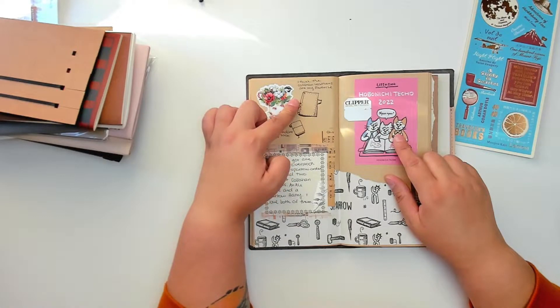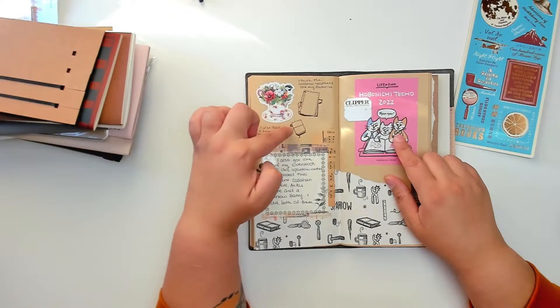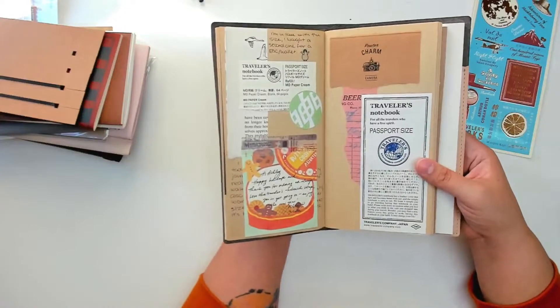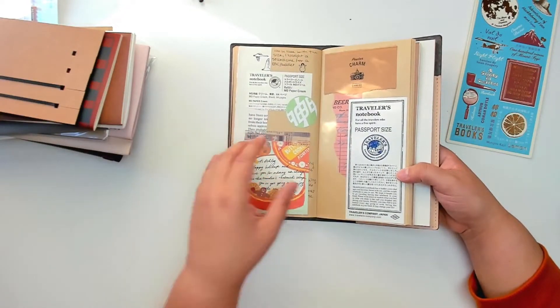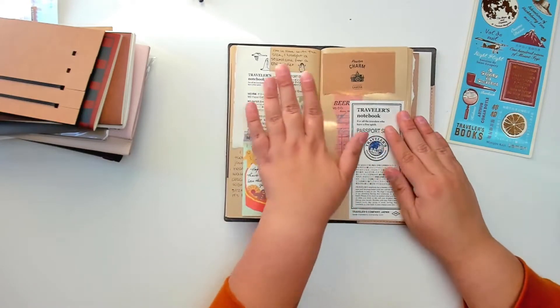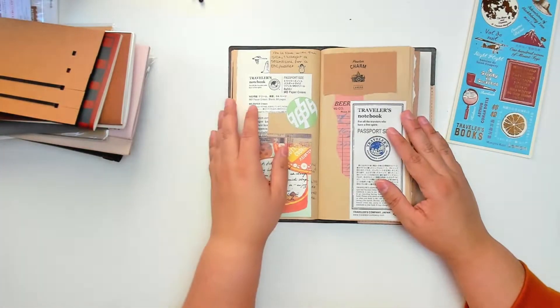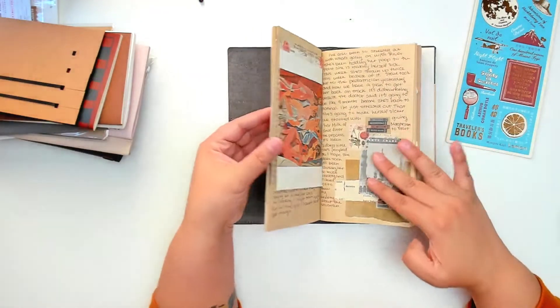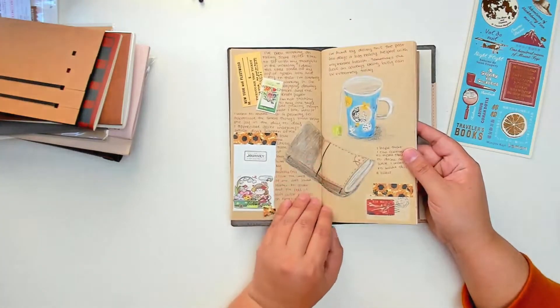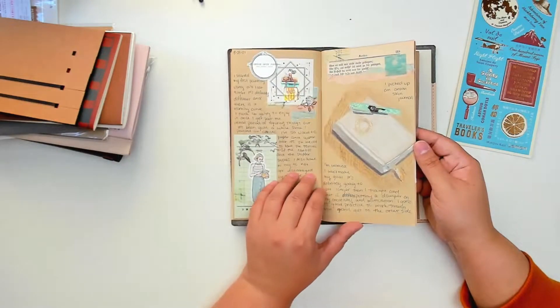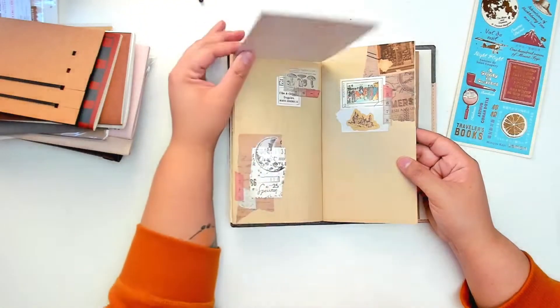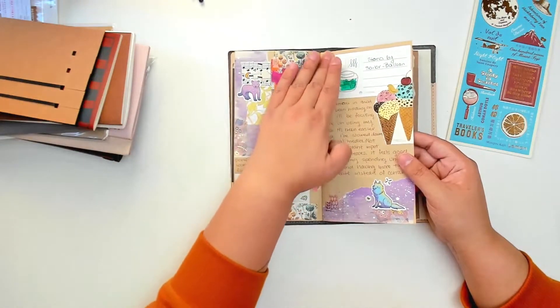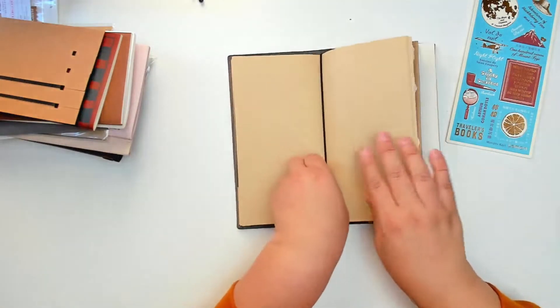When I got my haul from Chic Sparrow and got my first passport, I drew a little picture, journaled some, and stuck in lots of the ephemera from my order. I also write super personal feelings. I've been drawing in here with colored pencil. This is definitely for me, my own personal art journal.